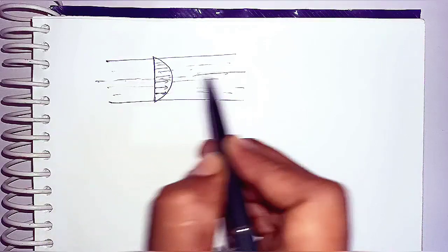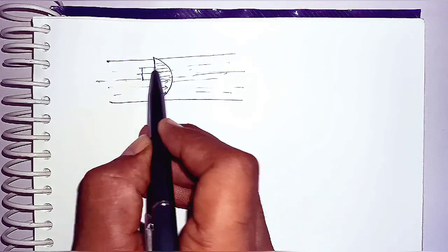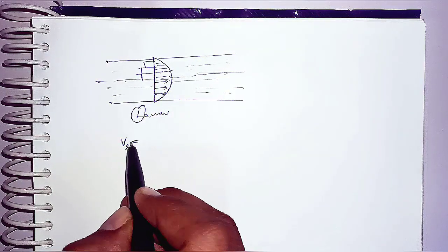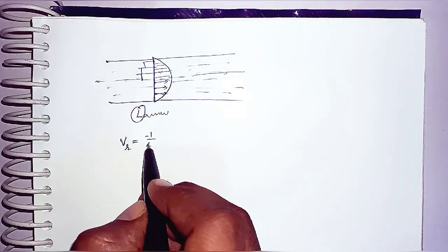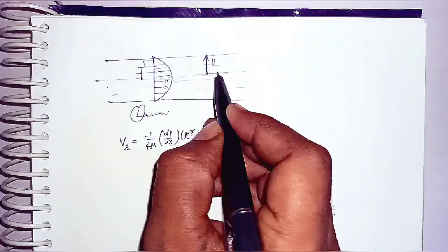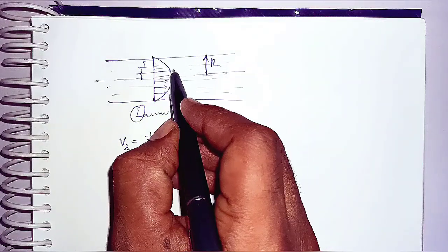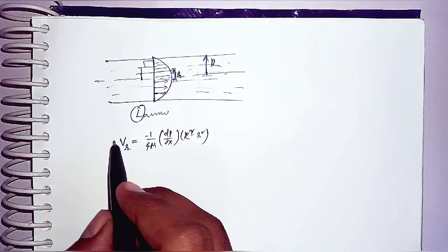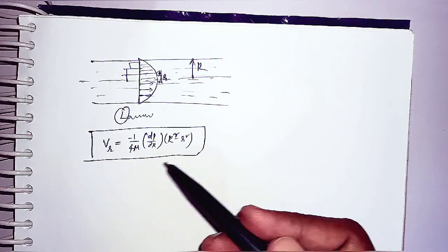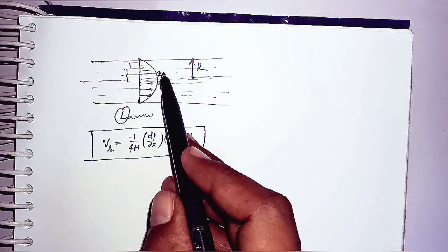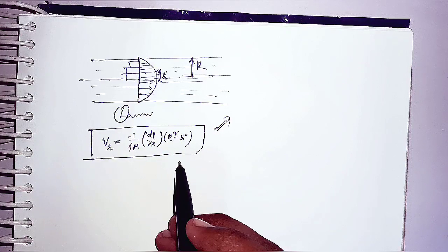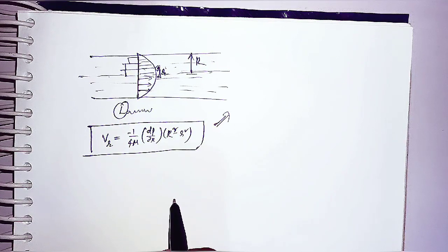In laminar flow, the velocity at any radial distance r from the center can be calculated using the equation: u = −(1/4μ)(dP/dx)(R² − r²), where R is the pipe radius and r is the radial distance from the center. This allows precise prediction of velocity at any point. In turbulent flow, we cannot predict the velocity distribution or the velocity at any specific radial distance from the center.